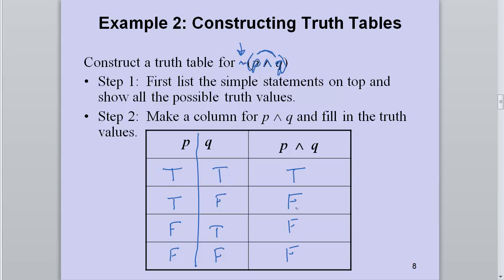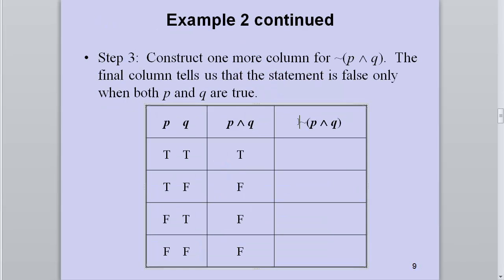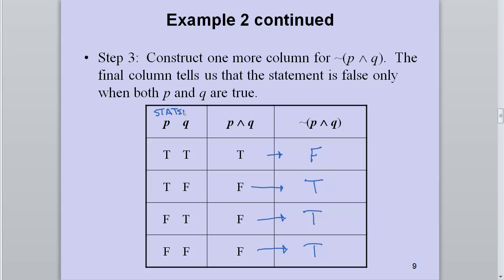Now I need another column to apply the NOT. I take true and negate it to get false; then false negated becomes true; false negated becomes true; false negated becomes true. When a statement is more complex, you always start with your base statements, then follow the dominance of connectives working from left to right. Always look back at nearby adjacent columns to fill in the next column — working with columns that are far apart makes it easy to make mistakes.